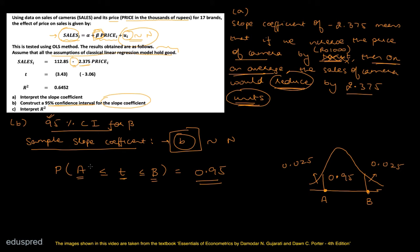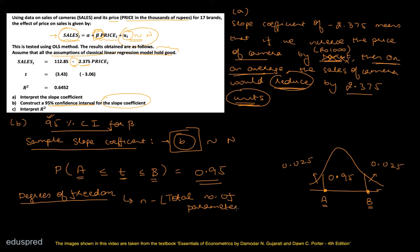We can find A and B from the T table, but first we need the degrees of freedom. The degrees of freedom for the T statistic equals n minus the total number of parameters to estimate. Here n is 17, and there are 2 parameters: alpha and beta. So degrees of freedom = 17 − 2 = 15.